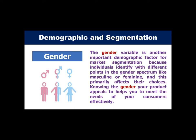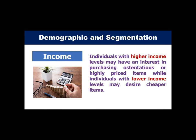The next variable is gender. Gender is another important demographic factor for market segmentation because individuals identify with different points in the gender spectrum — like masculine or feminine — and this primarily affects their choices. Knowing the gender your product appeals to helps you meet the needs of your consumers effectively. The next one is income. Individuals with higher income levels may have an interest in purchasing highly priced items, while individuals with lower income levels may desire cheaper items. Income affects a consumer's buying power and style of living.